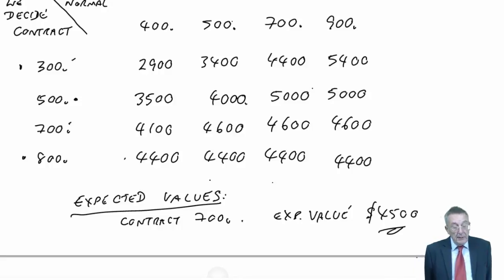Now, I'm not going to repeat it all because we have done it, but the decision on expected values, we contracted for 700 units. And the expected value, the average in a sense, was 4,500. Now, I'm not going to do it again. We've done that in the last lecture, but our expected values, we had to have the expected value for each of the choices. The highest was 4,500, and it was if we contracted for 700.